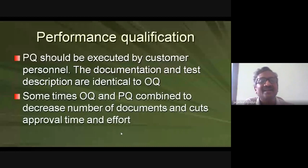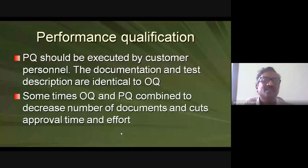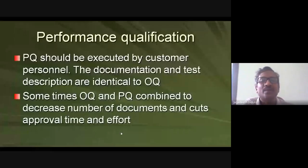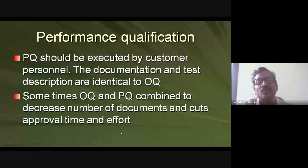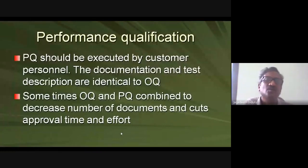PQ should be executed by the customer's own personnel — you learn, train, and operate the equipment according to your factory's requirements, such as desired hardness and friability for tablet punching. The documentation and test description in PQ are identical to OQ, but now you work at your specific operating point. For example, if the dryer works up to 250°C in OQ but your actual drying temperature is 150°C, you hold it at 150°C for two hours and verify it is stably maintained.